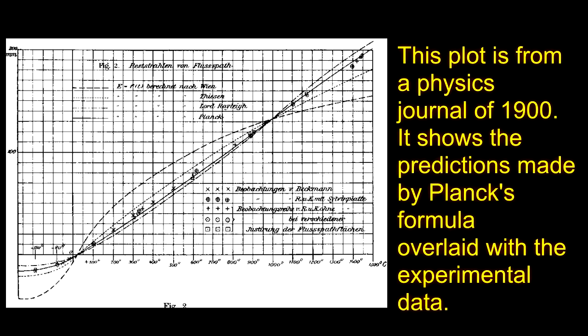Back in 1900, there were no computers and statistics software. To show that the equation worked, physicists just plotted their experimental data with the equation's predictions. Planck's equation fit the experimental data better than any other proposal. It solved the ultraviolet catastrophe at high frequencies and merged with the classical theory at low frequencies.